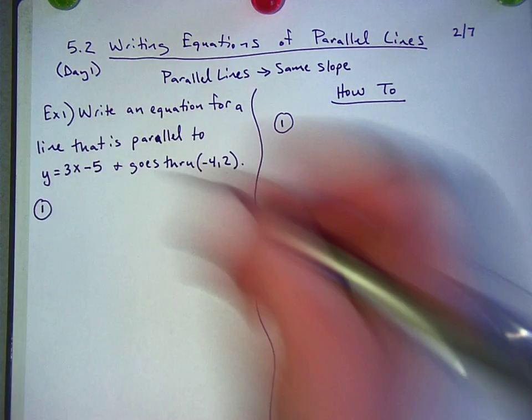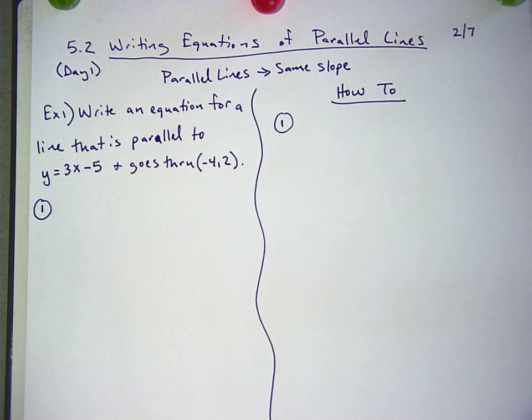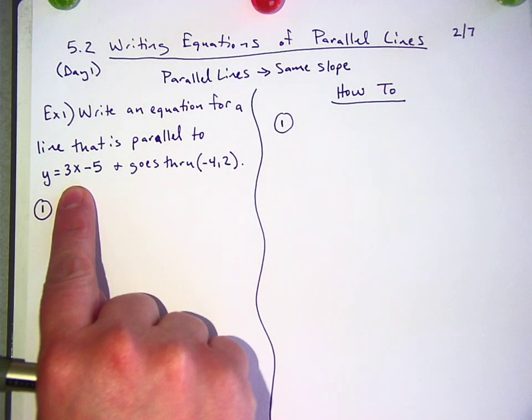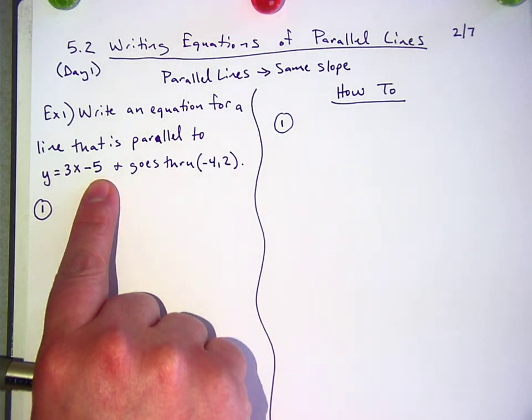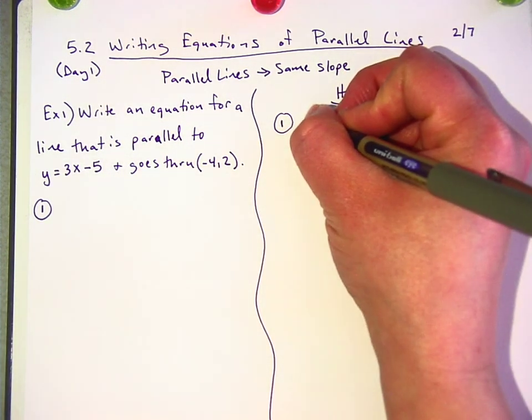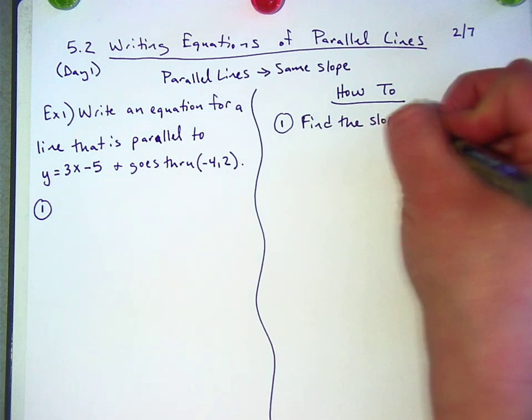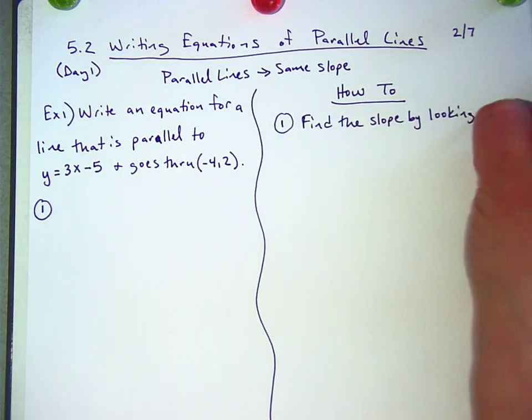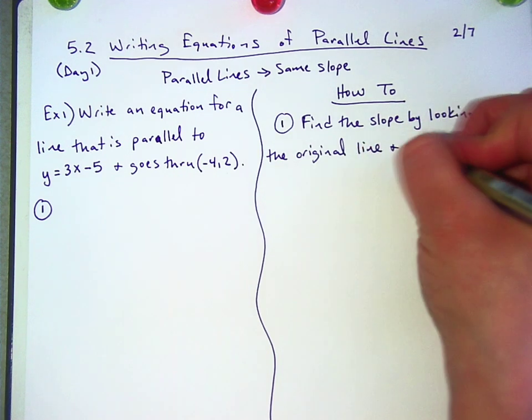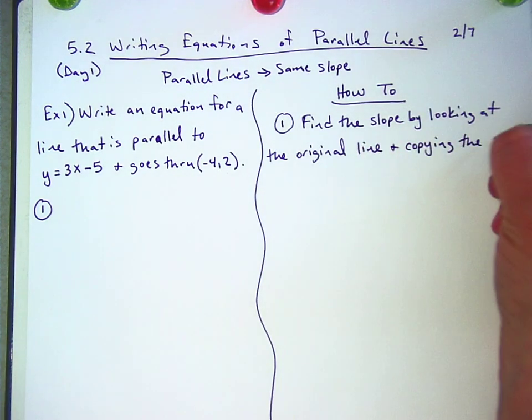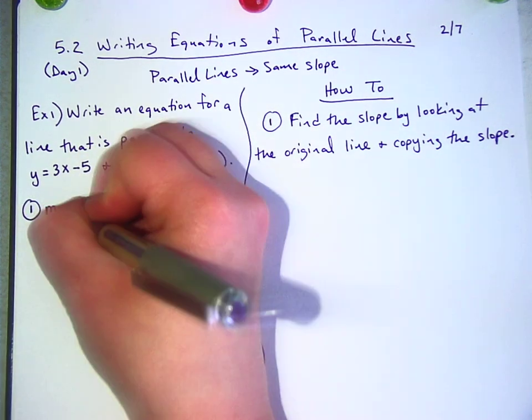So our first step is figuring out what our new slope is going to be. It's parallel to y equals 3x minus 5. So what's the slope of the new parallel line? This is the old one. What's the slope of the new one, Dylan? It's the same thing, but it's not going to have the same y-intercept, right? Because they're going to cross at different spots. So the first thing is find the slope by looking at the original line and copying the slope. Because it's exactly the same if they are parallel lines. So for number one, I'm just going to write m equals 3. I know the slope is 3.